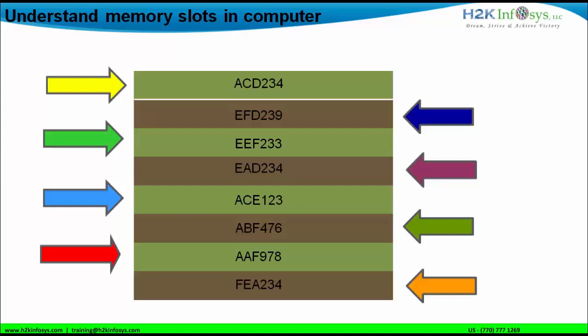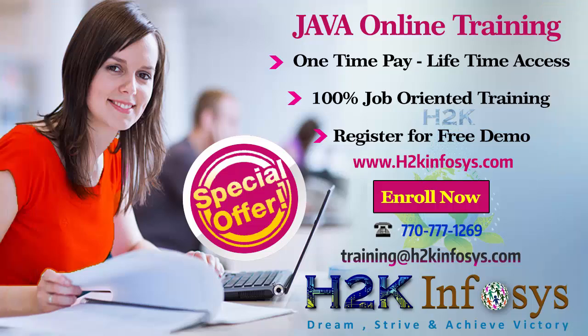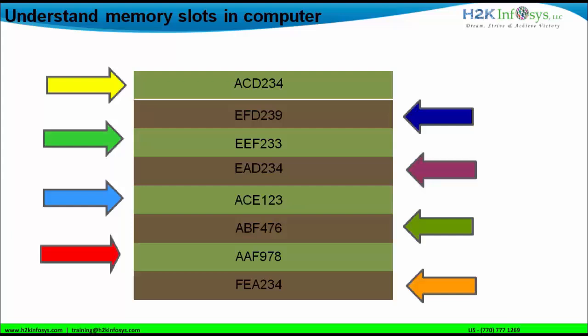In the real-time scenario, it is very difficult for human beings to remember the hexadecimal number which defines a particular memory slot. For example, if I want to put data in a memory slot whose hexadecimal number is ACD234, that's absurd. As a human being, we cannot remember the hexadecimal numbers given to these memory slots for the purpose of defining their address. Remembering memory slots with hexadecimal addresses is a pain in the neck.